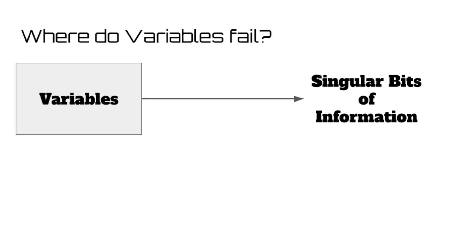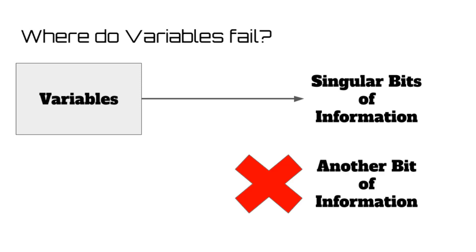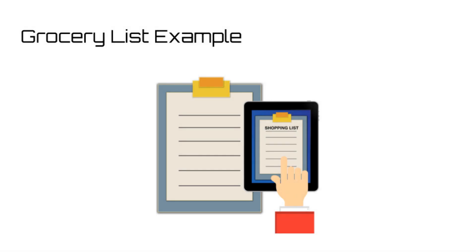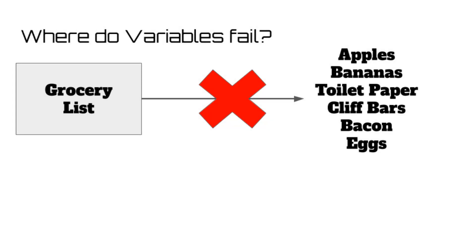But one of the biggest drawbacks that come with variables is their inability to hold more than one piece of differing information. For example, let's say you're making an app which allows users to create a grocery list. Well, there's no real easy way to create lists using variables, because it's not like you can have one variable store the names of seven or eight different food items.